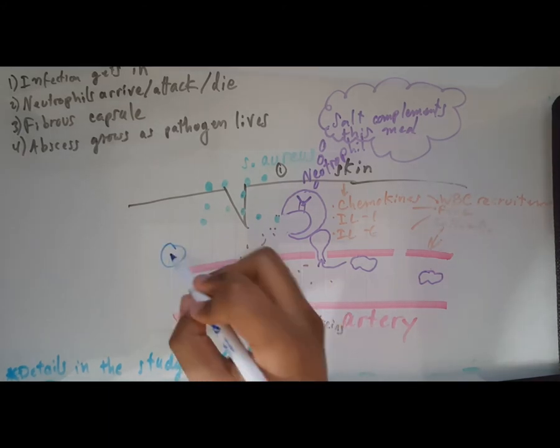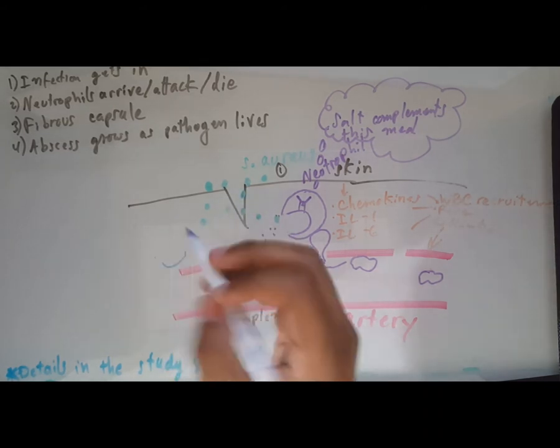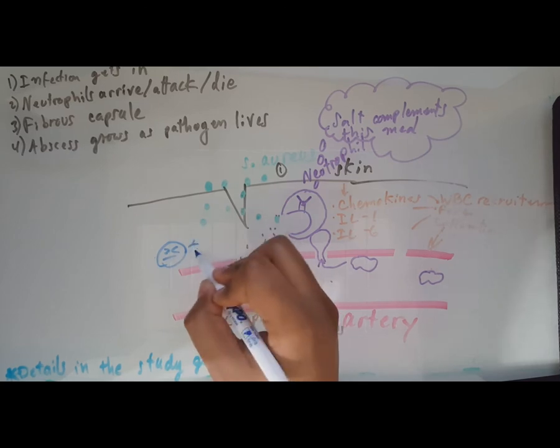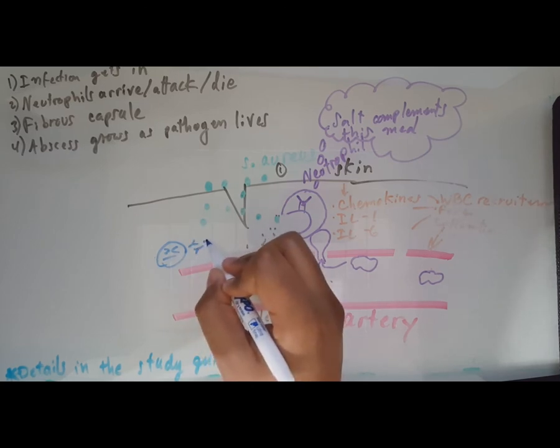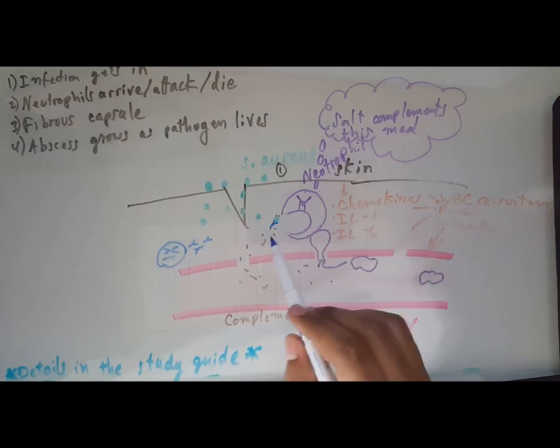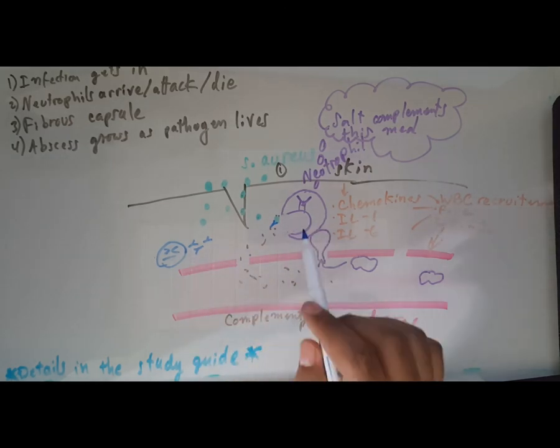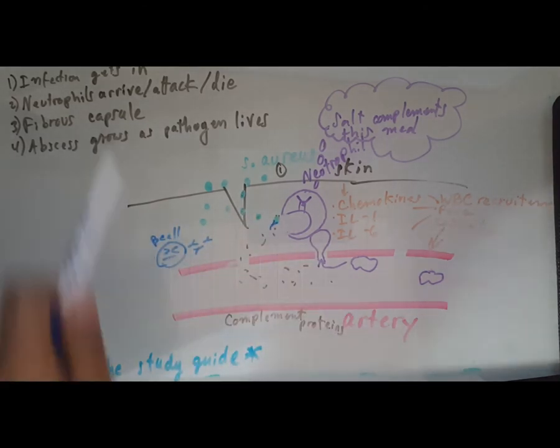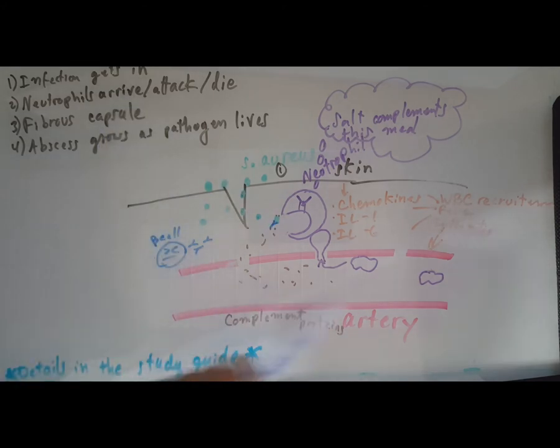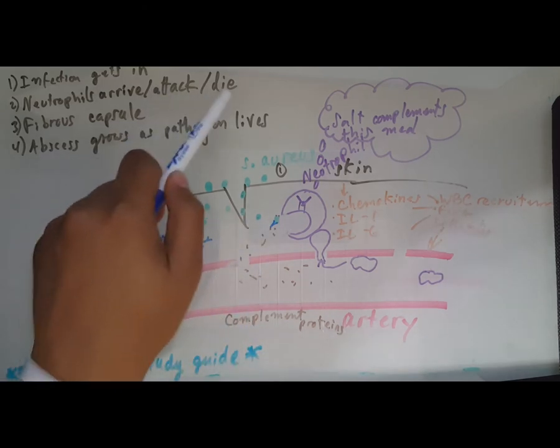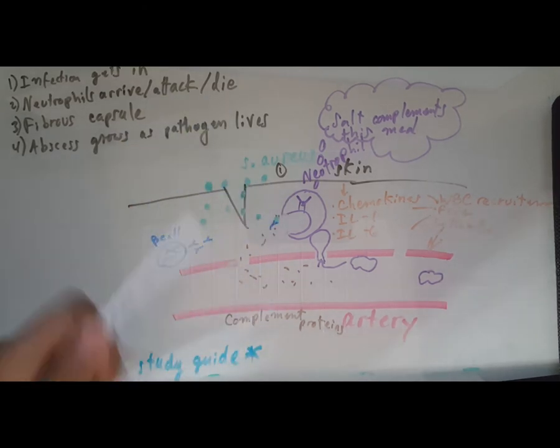Also, if we have B cells in the area that recognize this staph aureus, the B cells will shoot out a bunch of antibodies that will attach and also initiate a different part of the complement cascade so that the neutrophil can eat this guy. That's neutrophils arriving and attacking because of the complement proteins and antibodies.